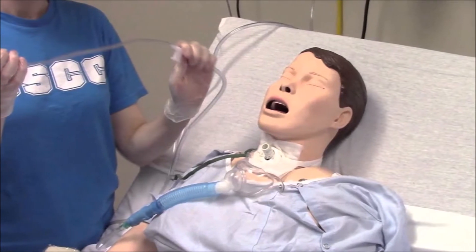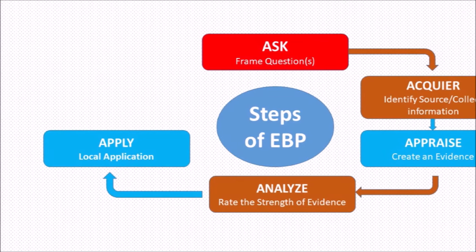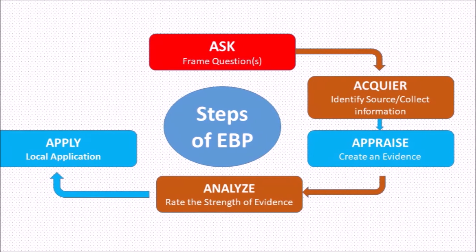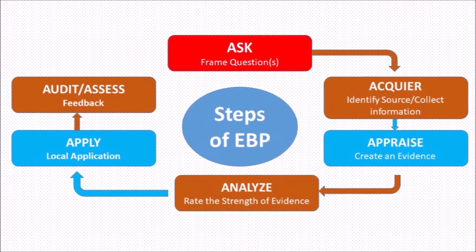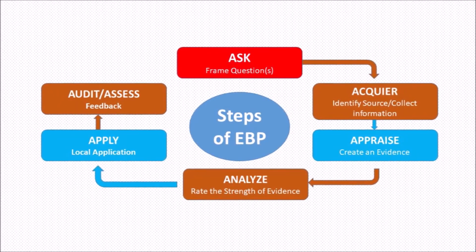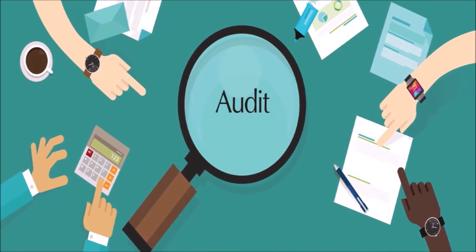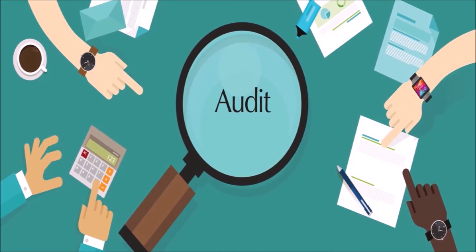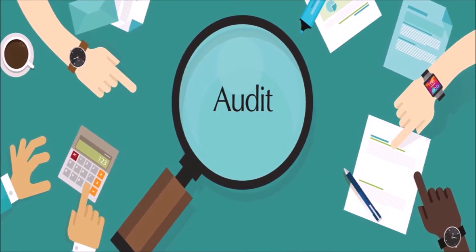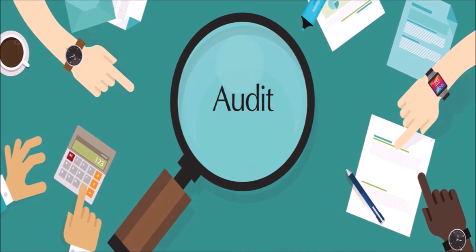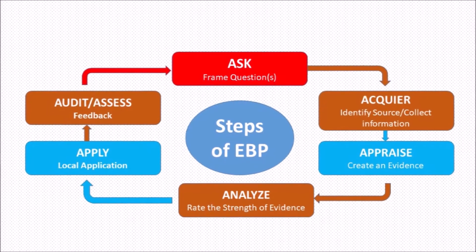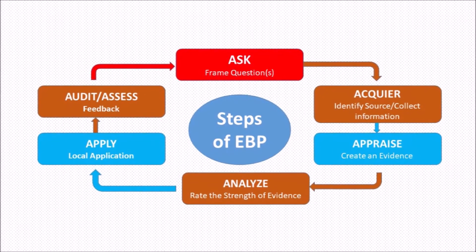Once you finish analyzing, then you go for the next step, i.e., Applying. Here you are going to apply or implement the procedure on the patient. The last step is Audit or Assess. Once you apply the procedure on the patient, you are going to assess the results of the implemented procedure and analyze them. If results are satisfactory, repeat the procedure if needed. If the results are poor, then repeat the steps of evidence-based practice.